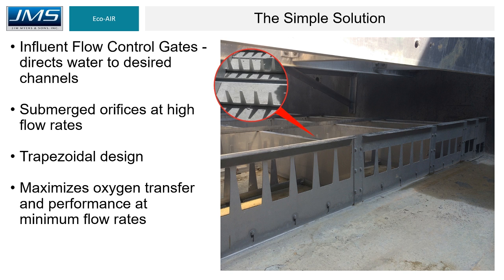Here you can see the influent flow control gates, trapezoidal in shape, located at the influent of the LPCA. There is an influent chamber where, as water rises, it is directed into the respective channel for maximum oxygen transfer at that respective flow rate. The trapezoidal shaped finger weirs allow for maximum oxygen transfer and performance at minimum flow rates and across the full range of daily flow.